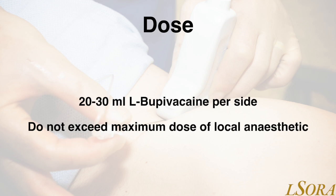In terms of dose, we would recommend a minimum volume of between 20 to 30 millilitres of local anaesthetic per side blocked. We tend to use levobupivacaine, and for midline or laparoscopic procedures, we site bilateral blocks. Care must be taken not to exceed the maximum dose of local anaesthetic allowed.